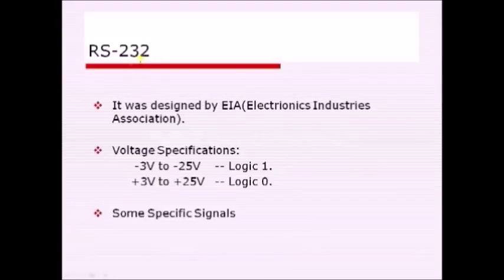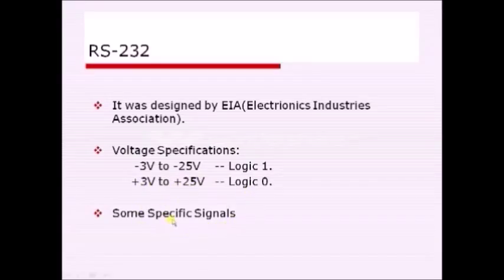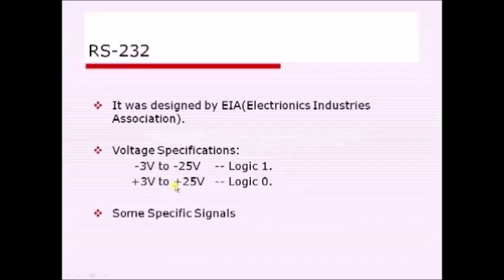RS stands for Recommended Standards, and it was designed by EIA — Electronics Industries Association. A protocol basically means a set of rules. RS232 specifies two rules: voltage specifications and signal specifications. In voltage specifications, it represents logic 1 with minus 3 to minus 25 volts and logic 0 with plus 3 to plus 25 volts. These signals are called negative logic signals, while TTL signals are called positive logic signals, because logic 1 is represented with negative voltage and logic 0 with positive voltage.